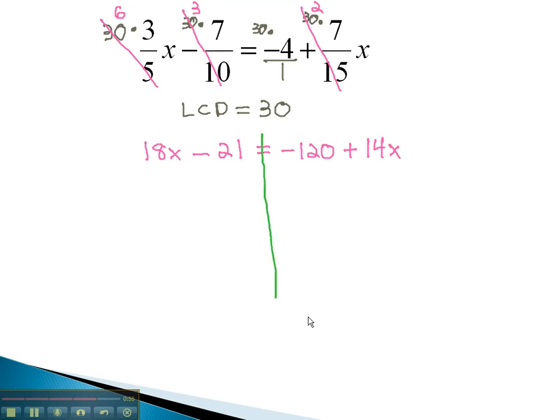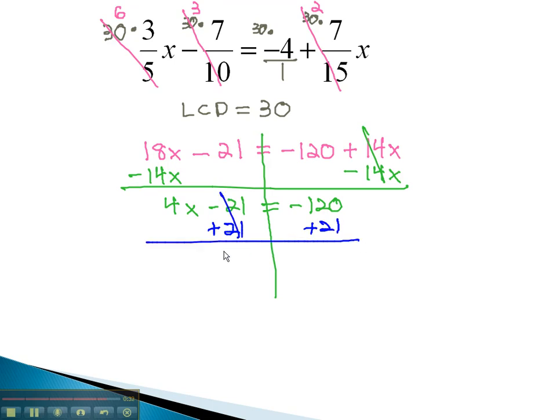We can solve this equation just like before now. Get the variable on one side by moving the smaller one, subtracting 14x from both sides. 4x minus 21 equals negative 120. Now, add 21 to both sides, and 4x equals negative 99.